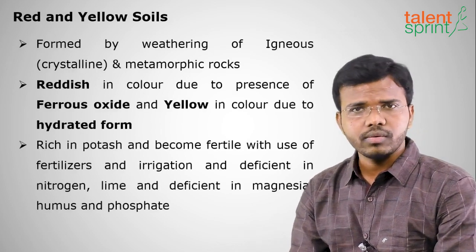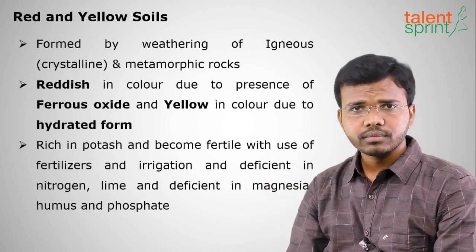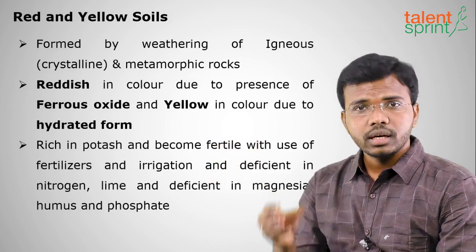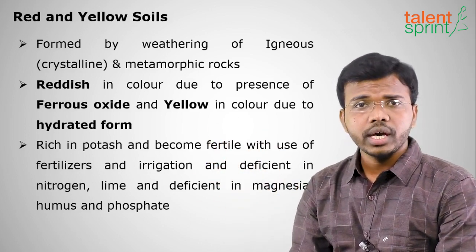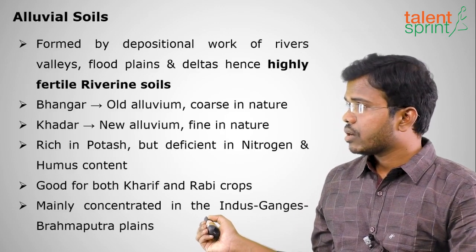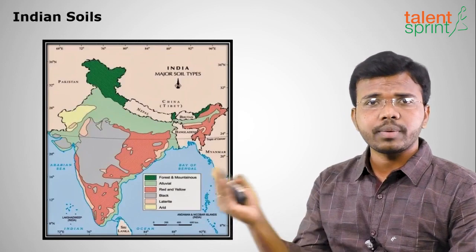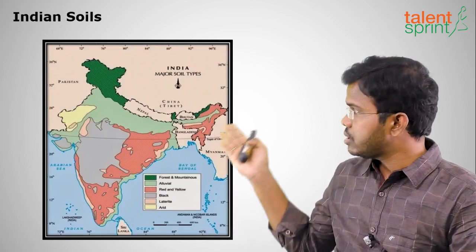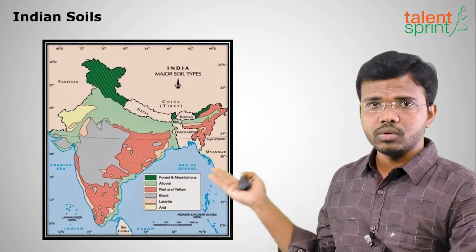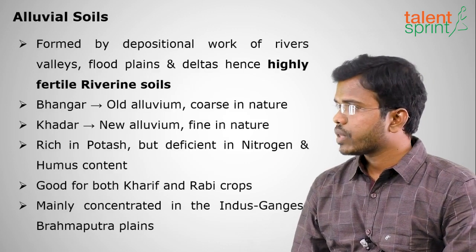Red and yellow soils are called red soils because of their iron content. They are called yellow soils when they acquire water and become hydrated. Looking at the soil map, the red-colored portions represent these soils — the eastern part of the Deccan Plateau, including Tamil Nadu, Andhra Pradesh, Telangana, and Odisha, are all red-soil-dominated places.